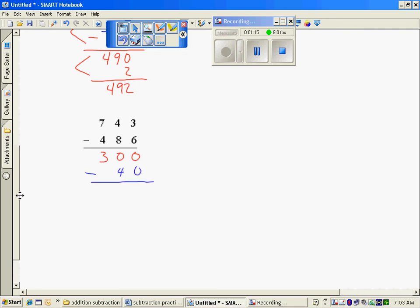300 minus 40 is 260. And in the ones column, 3 minus 6. Again, I can't take 6 from 3, so if I have $3 and I spent 6, I'm in the hole 3. 260 minus 3 is 257.